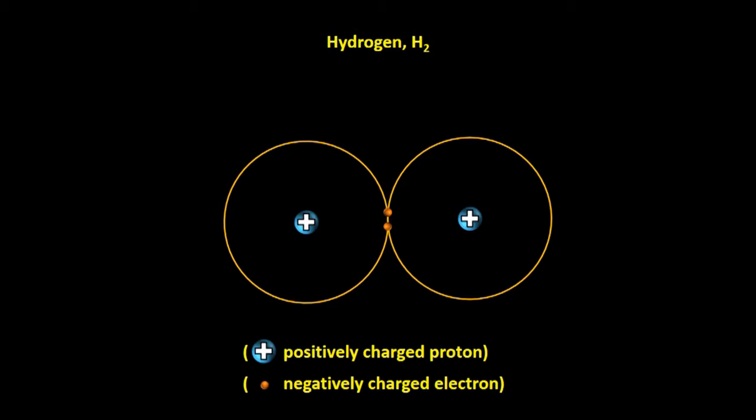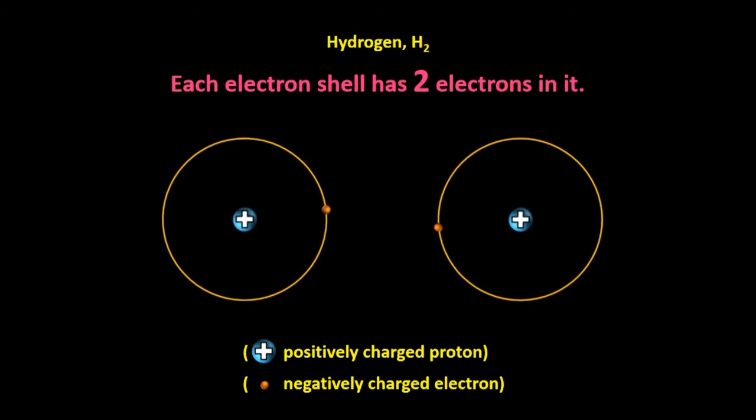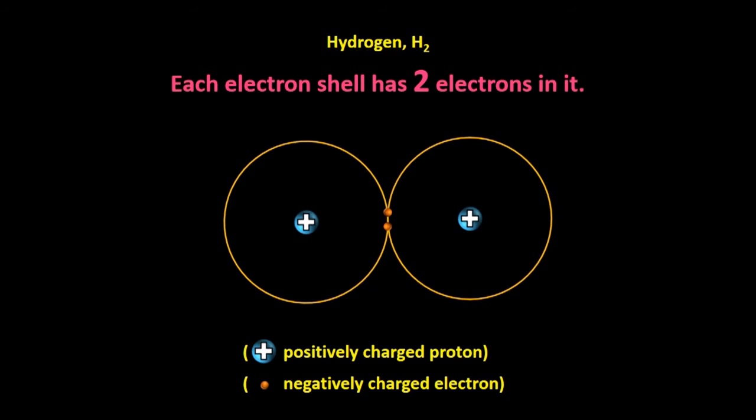So now, each electron shell doesn't have just one electron in it. Each electron shell has two electrons in it - its original electron and the one that has been attracted. As we saw in our last episode, two is the maximum number of electrons that the first shell of an atom can actually hold. So both electron shells are now full. It turns out that having a full outer shell is particularly stable, and atoms tend to chemically react with other atoms until their outer shells are full.